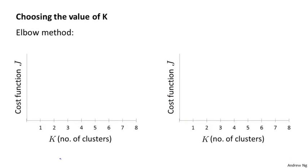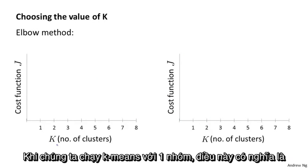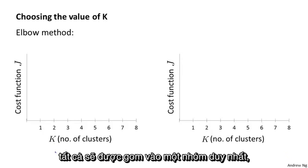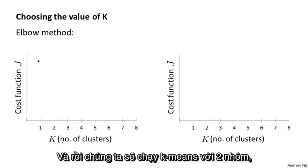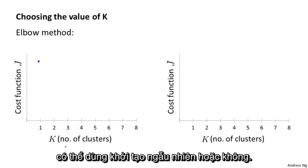So the elbow method, what we're going to do is vary k, which is the total number of clusters. So we're going to run k-means with one cluster, that means really everything gets grouped into a single cluster, and compute the cost function, or compute the distortion J, and plot that here. And then we're going to run k-means with two clusters, maybe with multiple random initializations, maybe not.